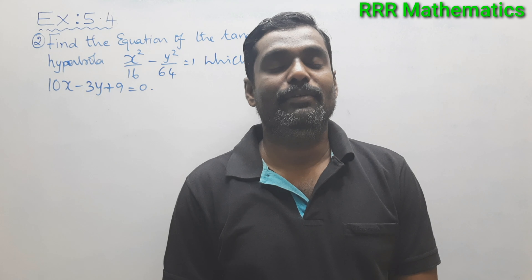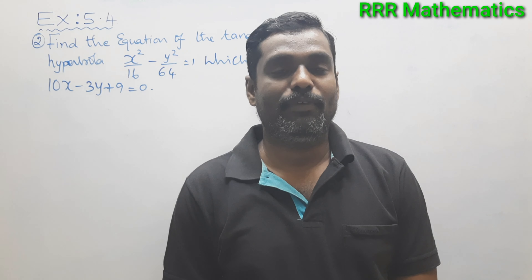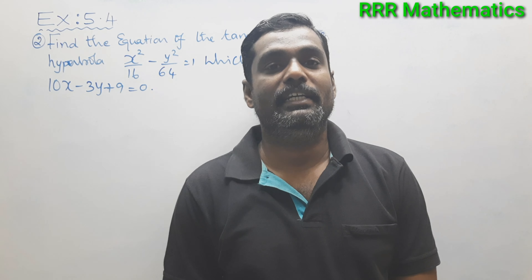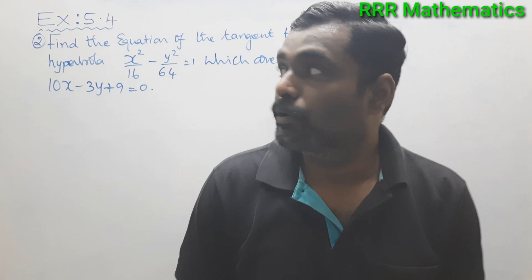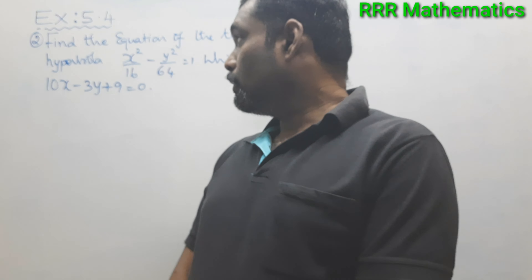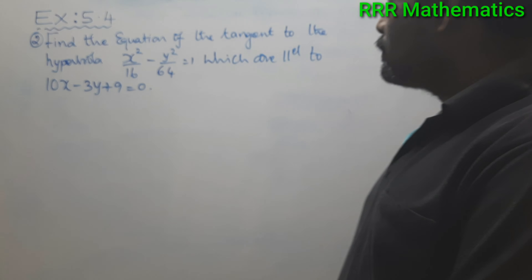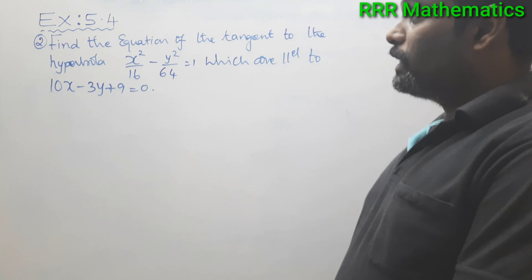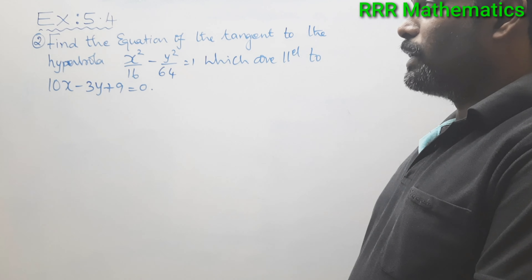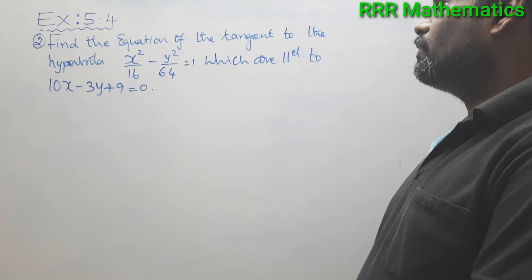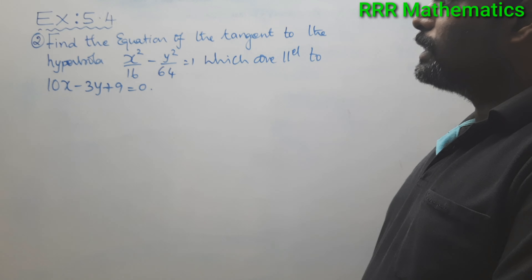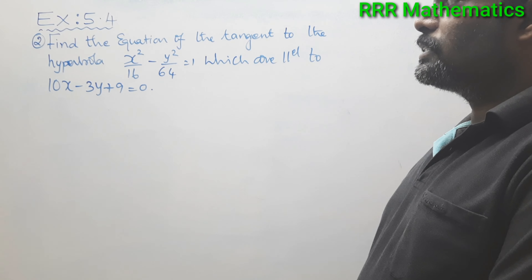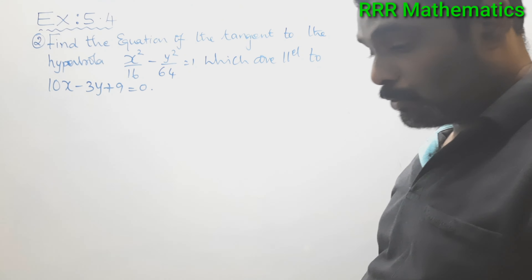Hi, my dear students. Today we will discuss chapter 5, two-dimensional analytical geometry, Exercise 5.4, question number 2. Find the equation of the tangent to the hyperbola x²/16 minus y²/64 = 1, which are parallel to 10x minus 3y plus 9 = 0.